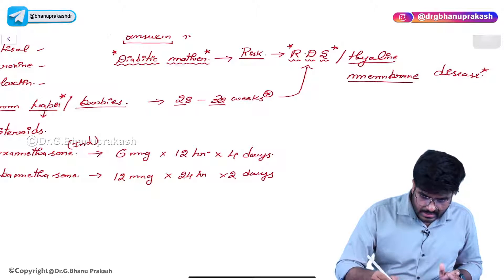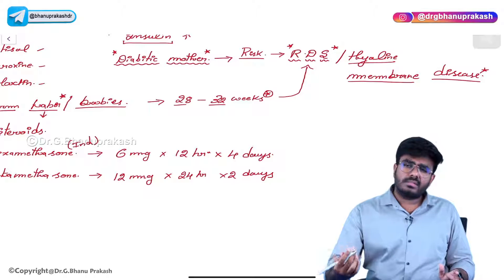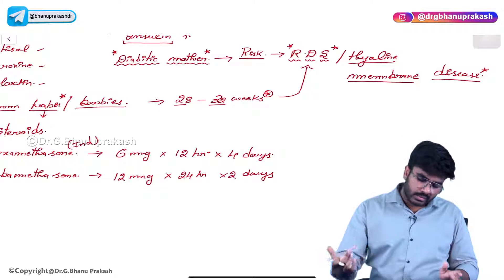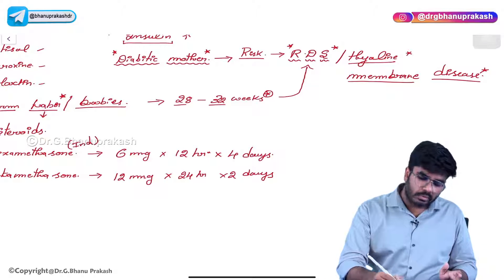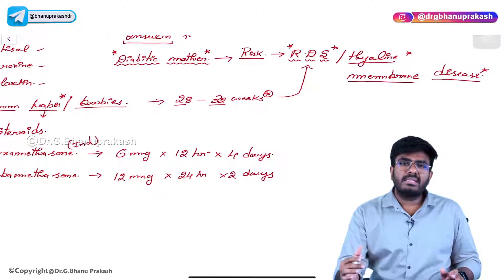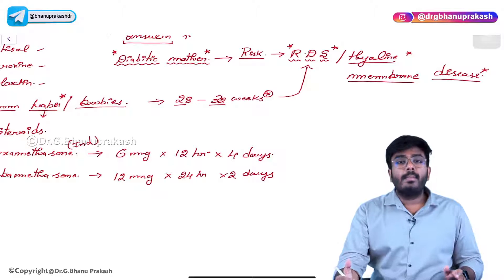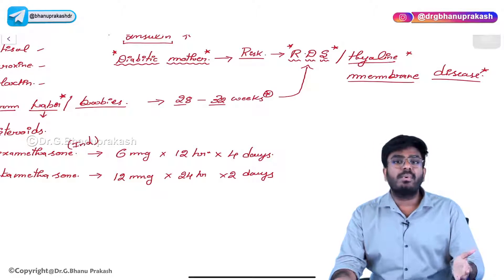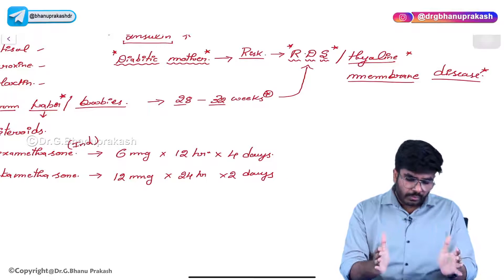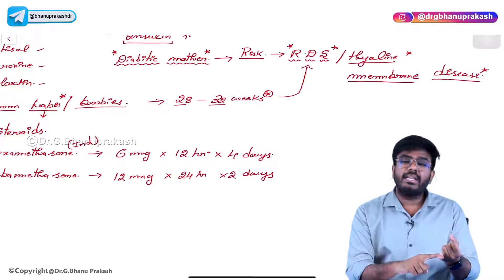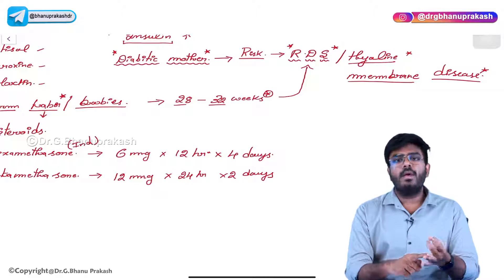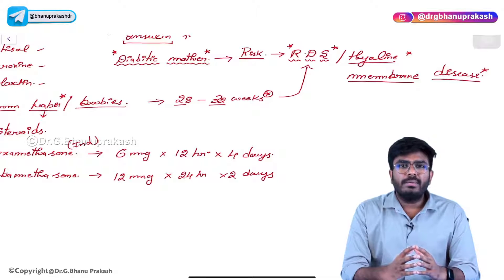Hyaline membrane disease is seen in babies whose mothers have diabetes mellitus. In this video, we discussed the respiratory zone and the surfactant — its composition, functions, and clinical importance. In the next video, we will discuss the mechanics of breathing, including muscles of inspiration and expiration.